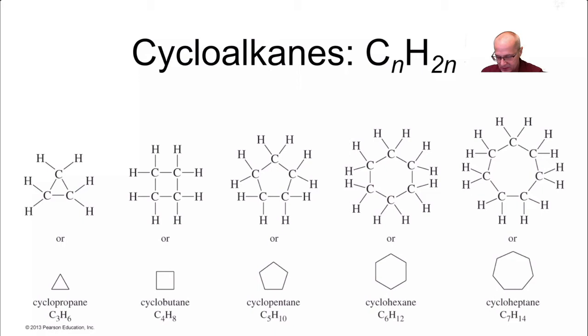So this is an example of a cycloalkane. That's cyclopropane. It has three carbons in the chain making a circular pattern or triangular pattern in this case. This is cyclopropane. Notice C3H6. Regular propane is C3H8 and looks like this.